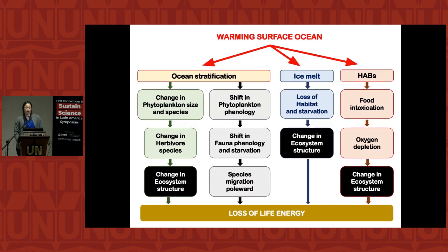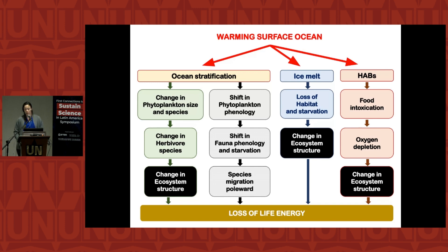To summarize: warming of the surface ocean leads to global ocean stratification, which causes changes in phytoplankton size and species, changes in herbivore species, and changes in ecosystem structure — creating longer food chains and loss of energy. There are also changes in phytoplankton phenology and seasonality, leading to shifts in fauna phenology or starvation of some species and species migration. Warming leads to ice melt in polar regions, causing loss of habitat and starvation. Finally, warming favors harmful algal blooms, leading to food intoxication, oxygen depletion, and changing ecosystem structure — and this is just the open ocean.